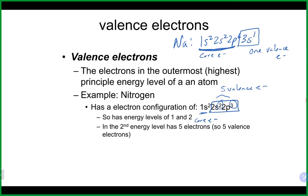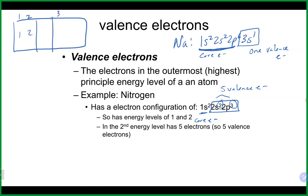You could write the electron configuration to figure out the valence electrons, but frankly the much easier way is that the number of valence electrons equals the group number on the periodic table. Everybody in group one has one valence electron, group two has two — skipping the transition metals — and groups three through eight have three through eight valence electrons respectively.